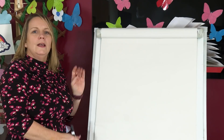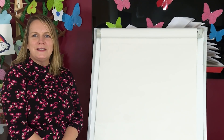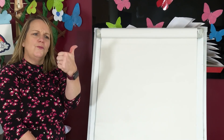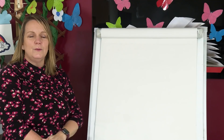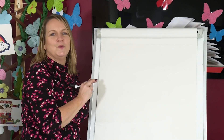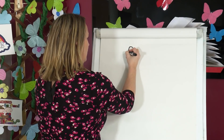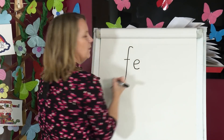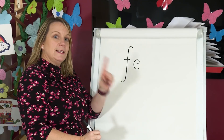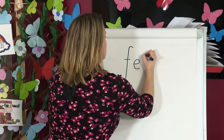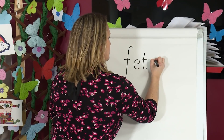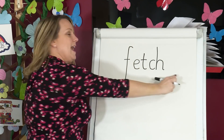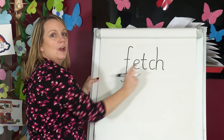Let's try another one. Let's spell fetch. Segment the sounds with me. Fetch. F, e, tch. Let's count how many sounds there are: f, e, tch. That's three sounds. Watch me write fetch. I need three sounds. F, e, tch is a trigraph — three letters, one sound. So I need to write three letters. Fetch. Fetch. F, e, tch. Fetch.